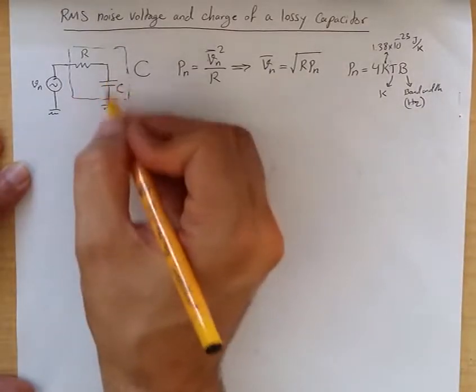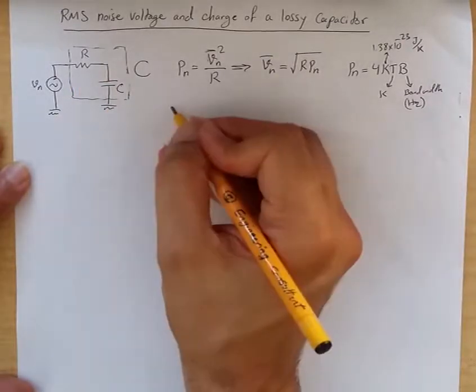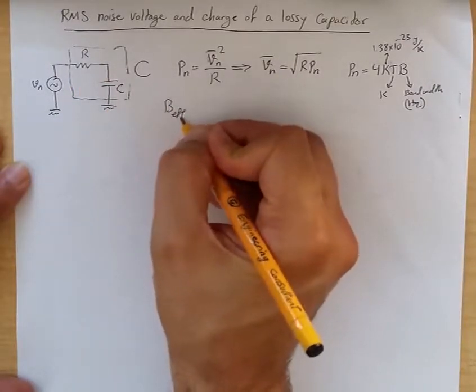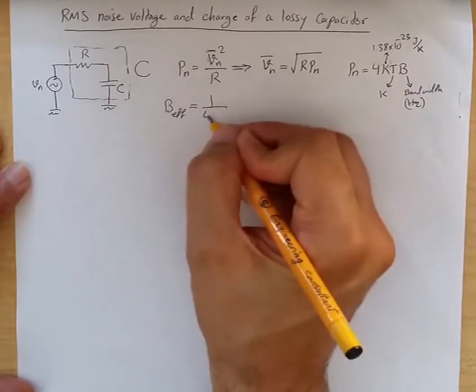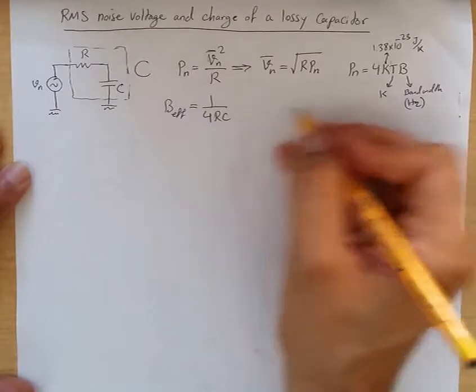Now, this is a simple RC circuit. For this circuit, we know that effective bandwidth is exactly 1 over 4RC.